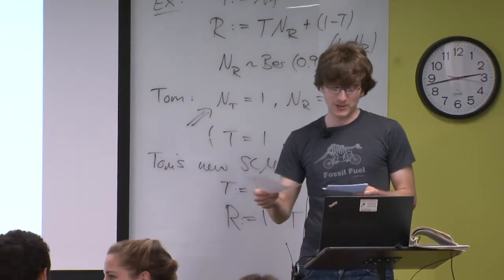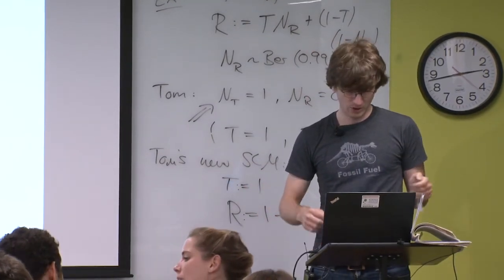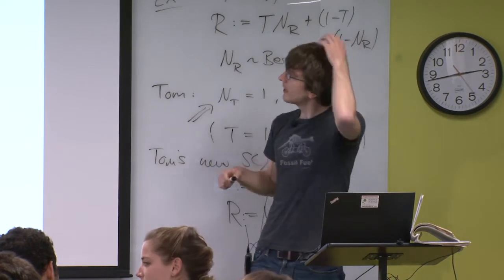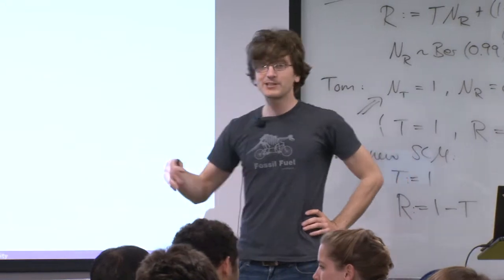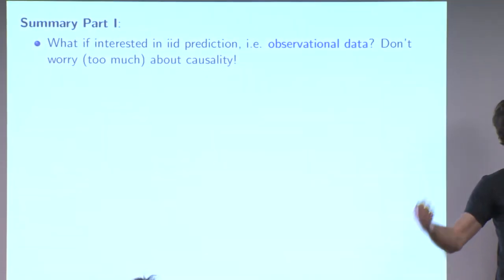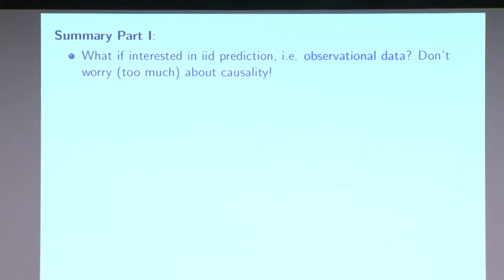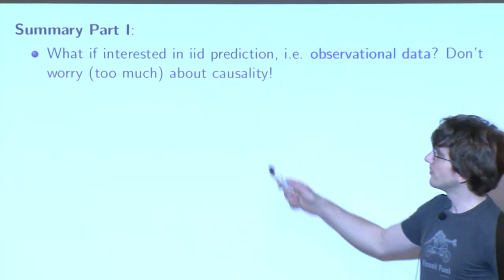To summarize this first part: this was really about the language of causality. Most of what I said was in the setting where we know the causal graph and causal structure, and how we can infer things about interventions. If you're only interested in IID prediction - observational data, predicting whether someone clicks an ad - causality doesn't play much of a role. Just include everything in your Markov blanket and don't worry about whether it's causal.